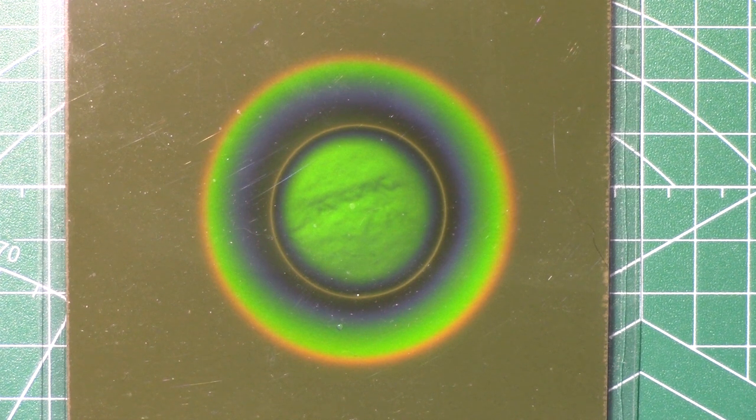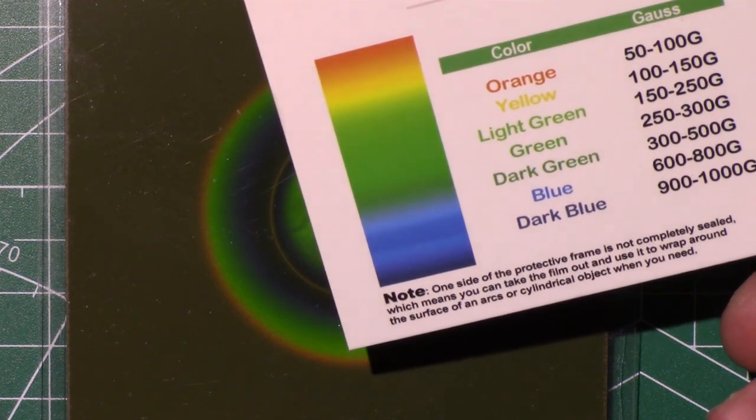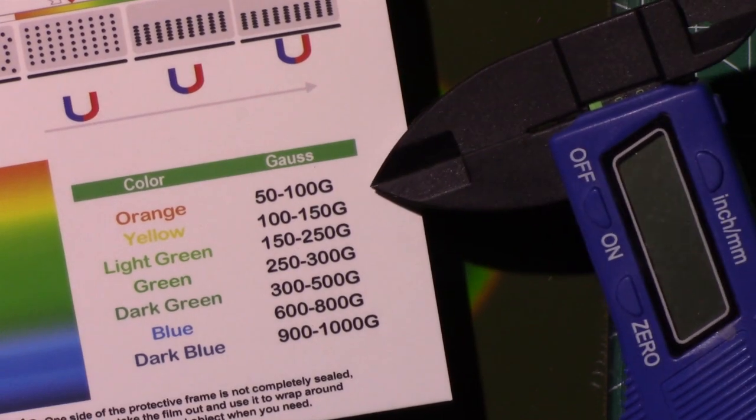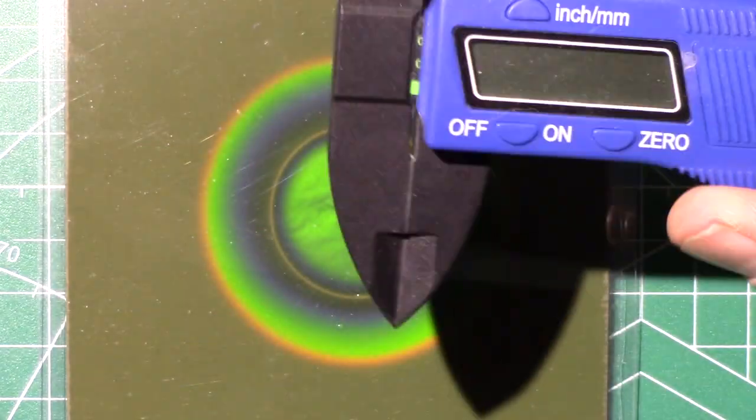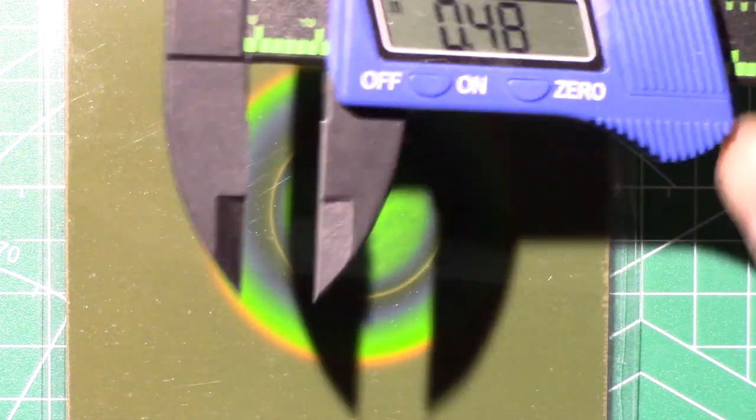Because what they say here is they say that the red or the orange and the yellow, that right between them is the boundary of 100 Gauss. So let's measure with these are carbon fiber calipers, so they're not going to induce the wrath of the magnet.